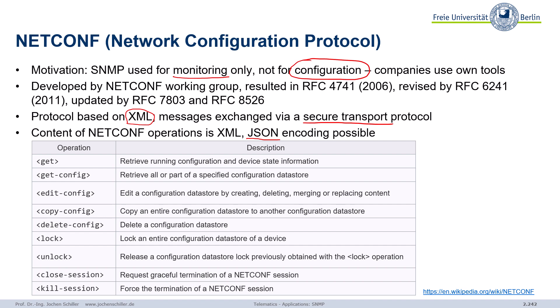We now have more operations: we still have get and set, but these are just examples. Get can do more — we can retrieve the running configuration of a device and the state of the device or parameters. We can download part of the data store, we can edit the configuration of the data store on the device, we can replace content, create content, delete — so a lot more.